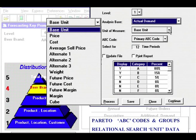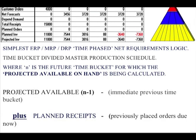Here we have the DRP algorithm — the simplest time-phased net requirements logic. It is a time-bucket-divided master production schedule. Where N is the future time bucket for which projected available on-hand is being calculated: projected available (N-1) is the immediate previous time bucket, plus planned receipts (previously placed orders due now), minus requirements (already committed orders). It's quite simple.